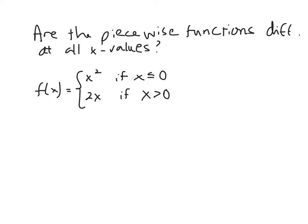If we look at the pieces individually, we have x squared, which is a quadratic that would be differentiable on all values of its domain, and then we have 2x, which would also be differentiable on all values of its domain. So the only part we'd be concerned with is where the piecewise graph comes together, which is at x equals zero.